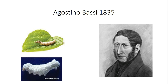Learning about spoilage caused scientists to start thinking: if microbes can cause alcohols to go bad, maybe they can also do damage to other organisms — like plants, or maybe even animals. And in 1835, before we knew that microbes were the causative agents of disease, Agostino Bassi was studying silkworms.